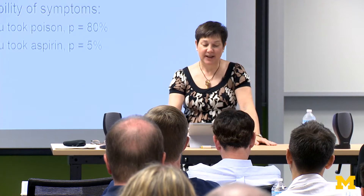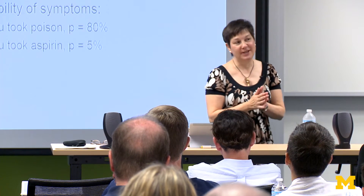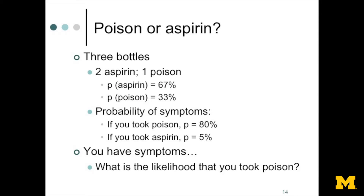Now, you're not feeling so hot. You think: if I took the poison, it's 80% likely I would have gotten sick. If I took the aspirin, it's only 5% probable that I get sick. So the question is: now that you have symptoms, what's the likelihood that you took the poison?